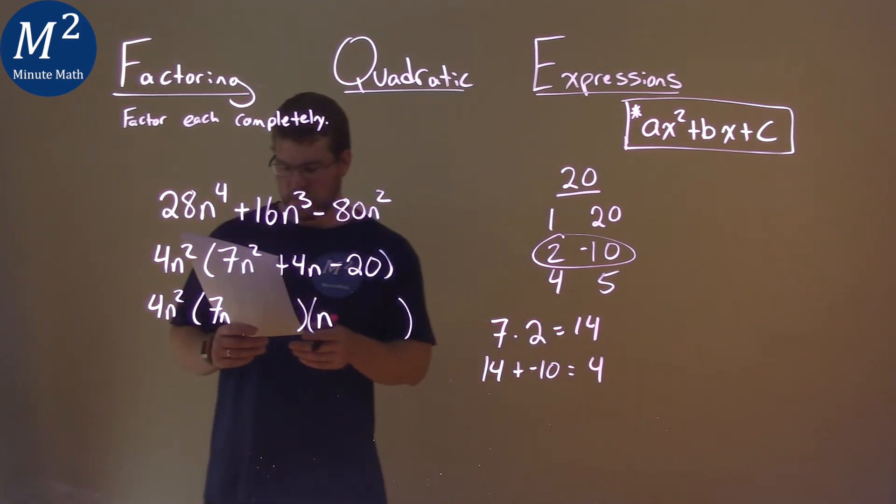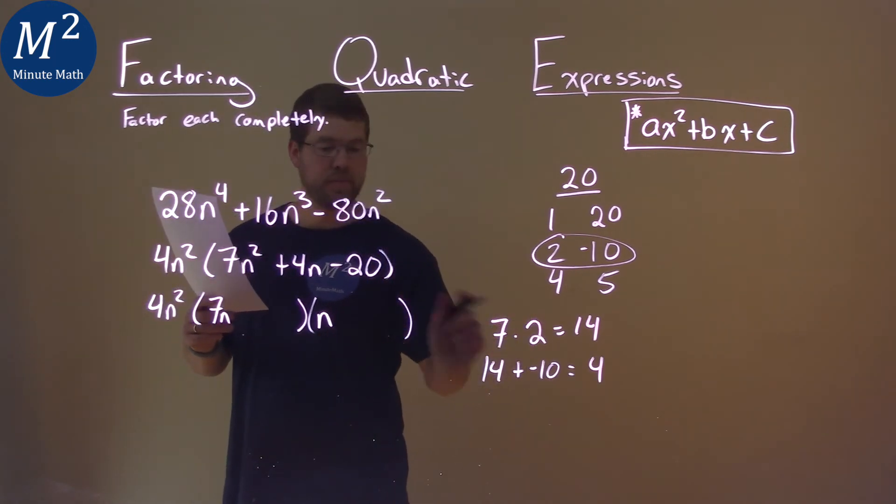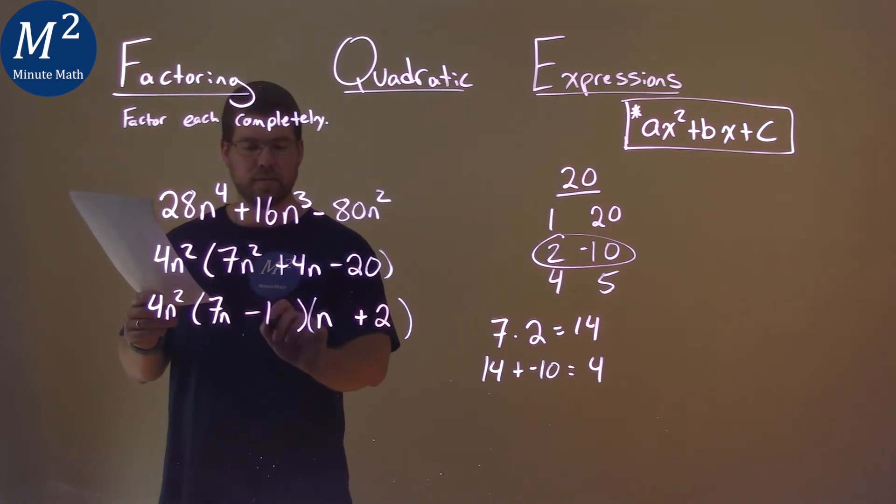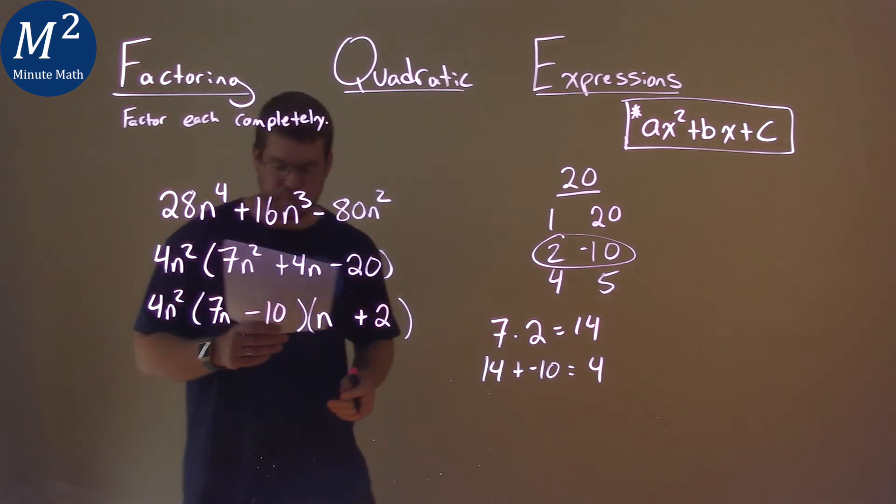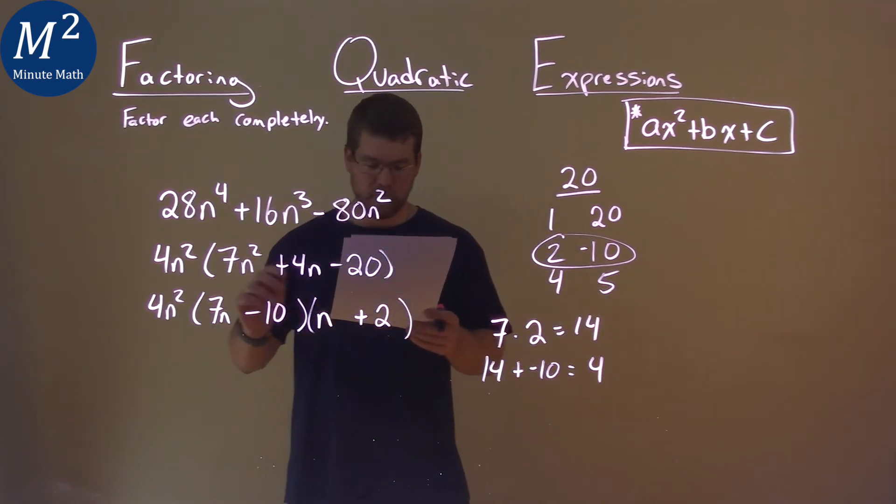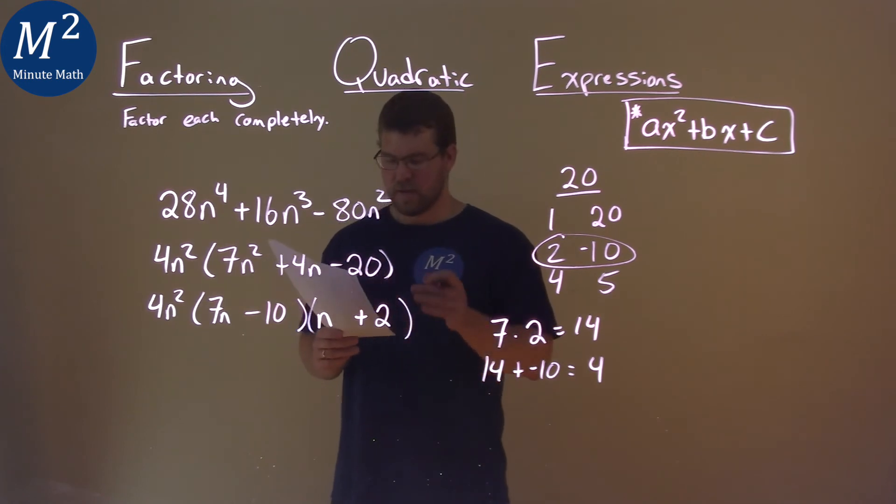So 2 and negative 10 are our two numbers. So let's make sure now 7n, we said, was going to multiply by the positive 2. So we put a plus 2 on this side. And then we have a minus 10 here. It goes there. And so now we have it actually in completely factored form. 4n squared times 7n minus 10 times n plus 2.